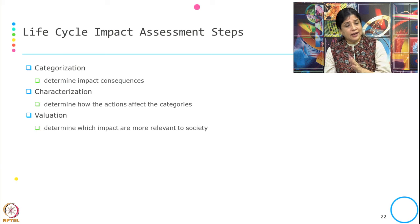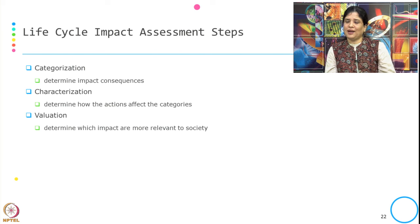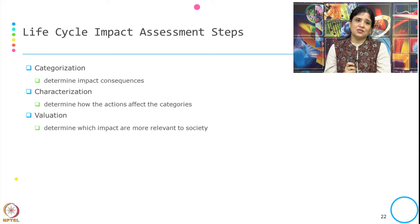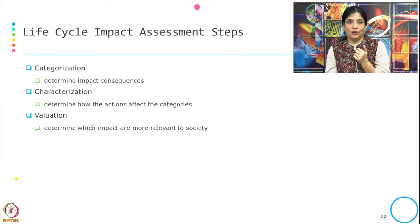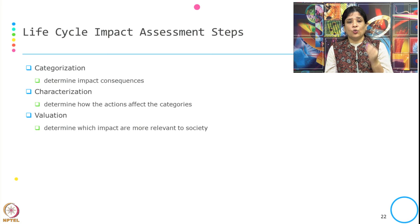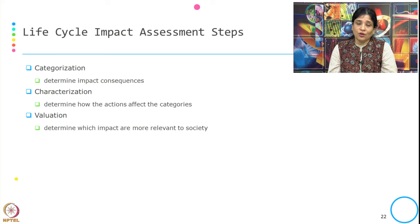Regardless of the type of energy or inputs used to get the end product, when we do impact assessment, we apply three steps: categorization — determining the impact consequences; characterization — determining how actions affect the category; and valuation — determining which impact is most relevant to society, because whatever negative externality is created for other stakeholders, we need to identify which impacts are most relevant.